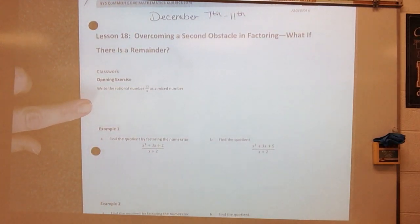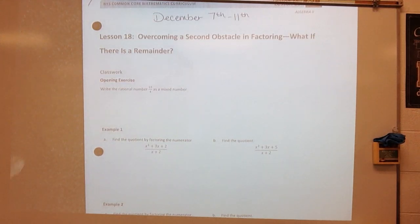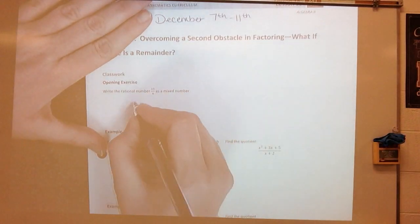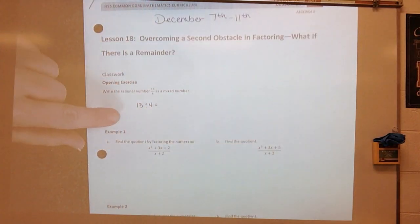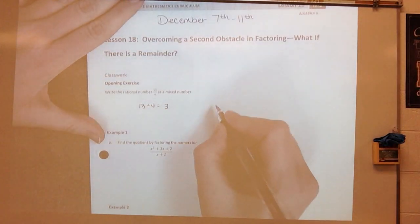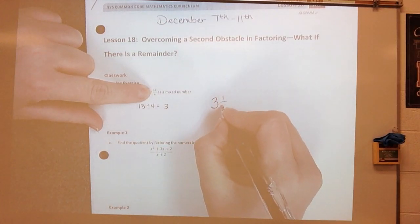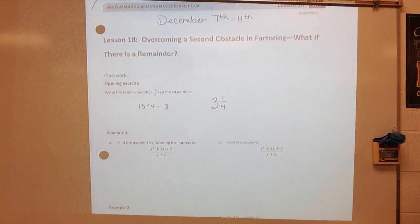Let's look at our opening exercise. Write the rational number 13 fourths as a mixed number. This is going back to elementary days. If you remember, we would divide 13 by 4, and that would be 3 — that is our whole number. 4 times 3 is 12, which means I have 1 left over. So we would write that as 3 and 1 fourth.